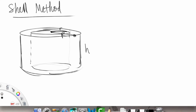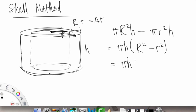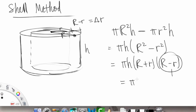Here's our height. The distance in between big R and little r is equal to delta r. The volume of the cylindrical shell is basically the volume of the outer cylinder — that would be π·R²·h — and then subtracting the inner cylinder, so subtracting π·r²·h. We can factor out the π and the h, so we get π·h times (R² − r²), which factors further into π·h times (R + r)(R − r).